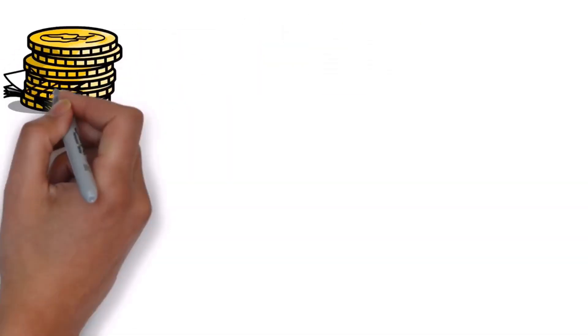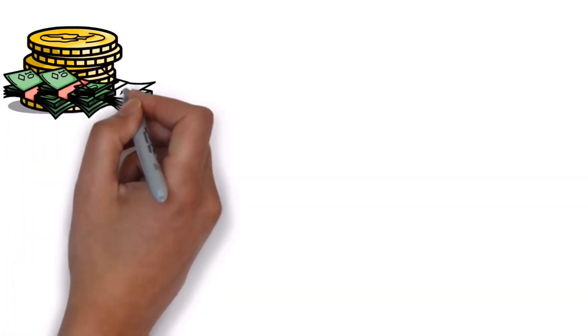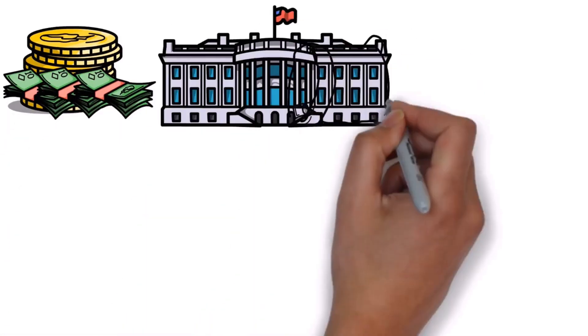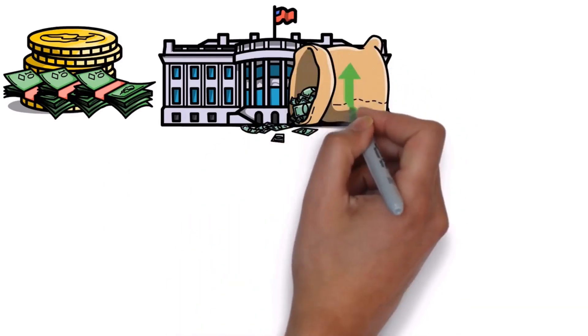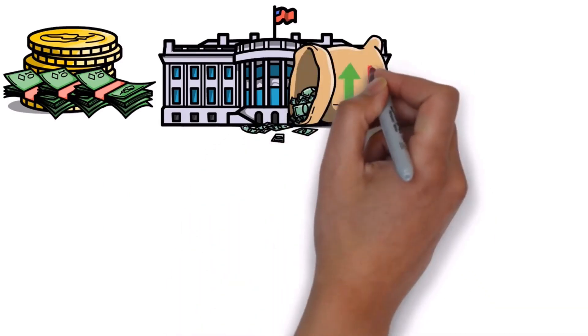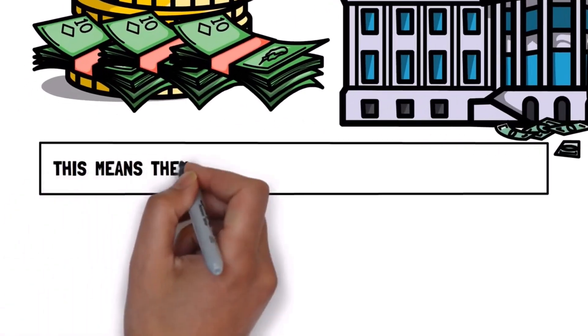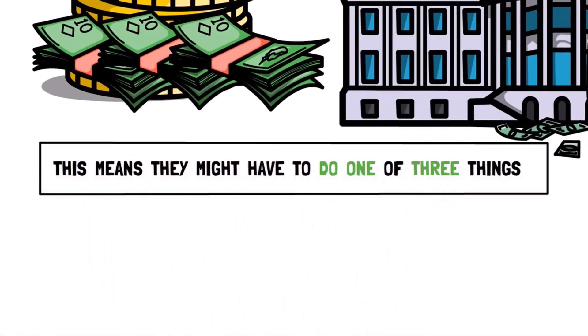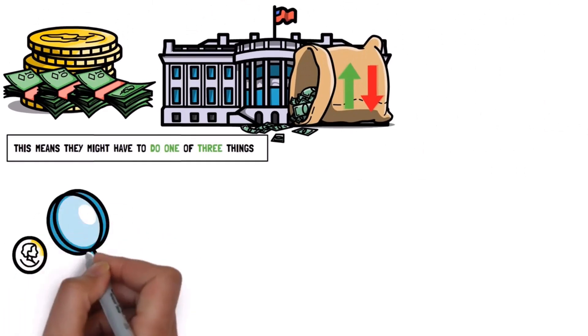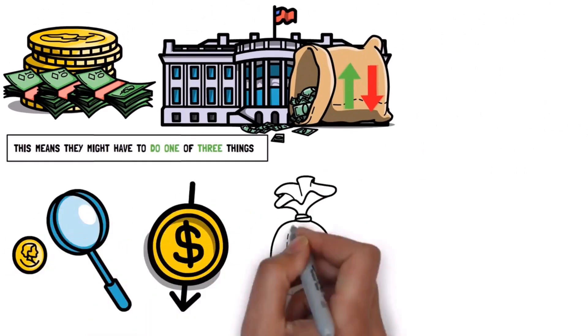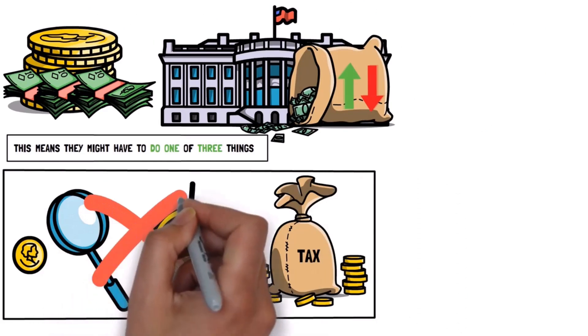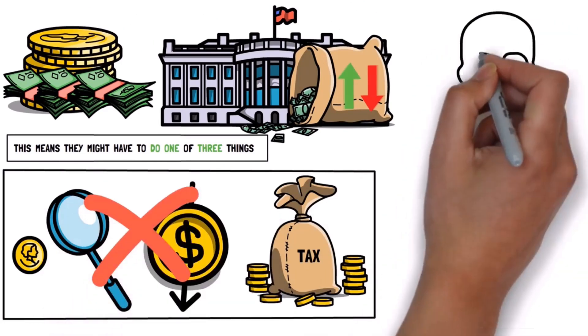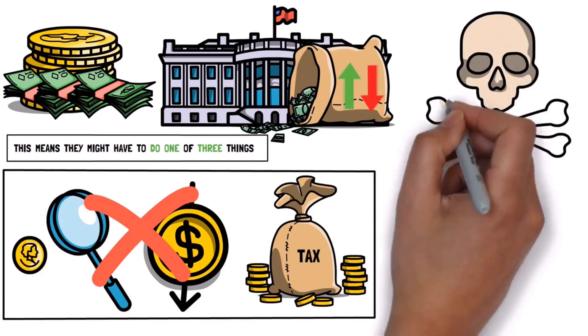So, what's really happening here is that the government will have to use more of its money to pay interest on its debt. This means they might have to do one of three things: Either find more money later, cut down on spending, or increase taxes. But since they probably don't want to do the first two, they might just keep borrowing more money, which can lead to a dangerous cycle of debt piling up.